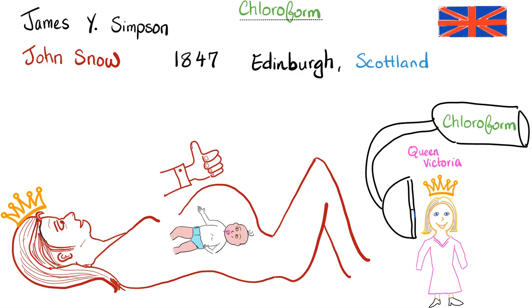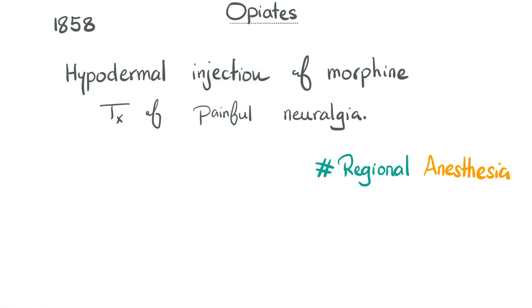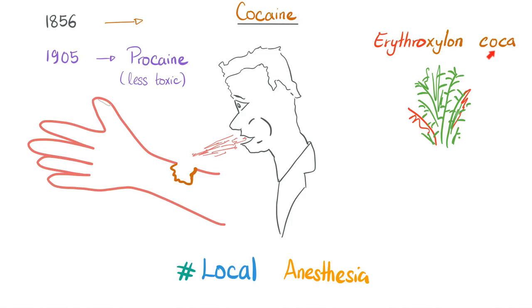In 1858, hypodermal injection started and we began injecting morphine for treatment of painful neuralgia — hashtag regional anesthesia. It then became clear that the erythroxylon coca plant gives you cocaine and is a local anesthetic. Then we discovered procaine, which is less toxic than cocaine.